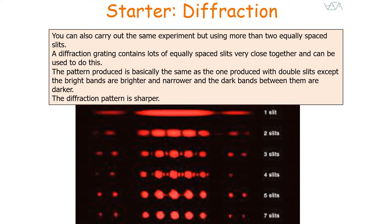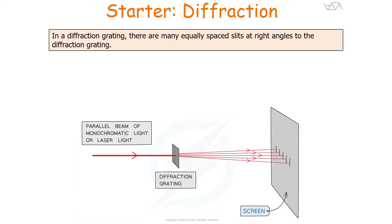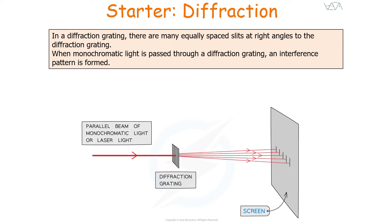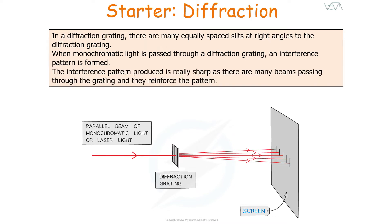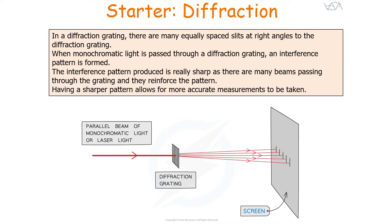The more slits you have, the narrower, brighter and sharper your fringes become. In a diffraction grating, there are many equally spaced slits at right angles to the incident wave. When monochromatic light is passed through a diffraction grating, an interference pattern is formed. The interference pattern produced is really sharp as there are many beams passing through the grating and they reinforce the pattern. Having a sharper pattern is very useful as it allows for more accurate measurements to be taken of the fringe spacings.